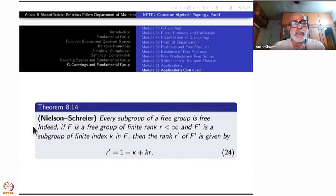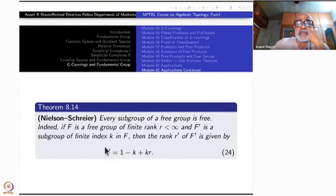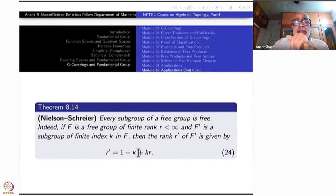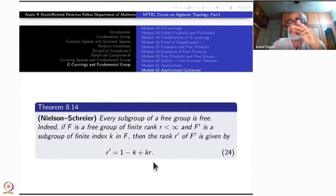There is a further clause: if F is a free group of finite rank R and F' is a subgroup of finite index K, then the rank R' of the subgroup is given by R' = 1 minus K plus K times R. We can derive this using Euler characteristic and covering space theory developed in this course.